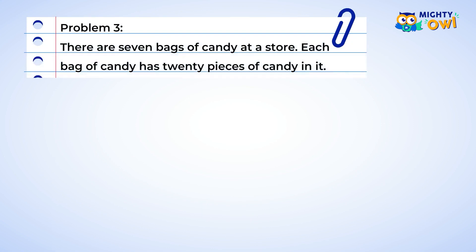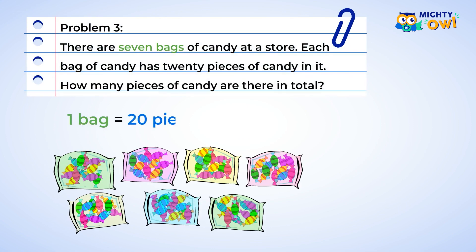Alright, one more to practice. There are seven bags of candy at a store. Each bag has twenty pieces of candy in it. So how many pieces of candy are there in total at the store? Well, this problem has seven groups of twenty. Since you already know that twenty is two tens, you can make it easier and first multiply seven and two. Seven multiplied by two is fourteen. And since we are really multiplying by twenty, which is two tens, our final answer is fourteen tens. And we need to have a zero at the end of fourteen. And that makes it one hundred forty. So there are one hundred forty pieces of candy in total. Great job on all these problems!